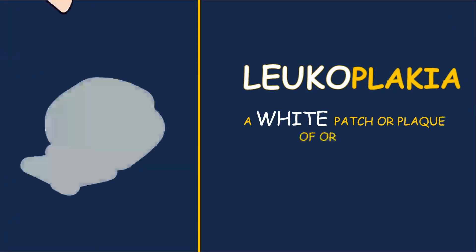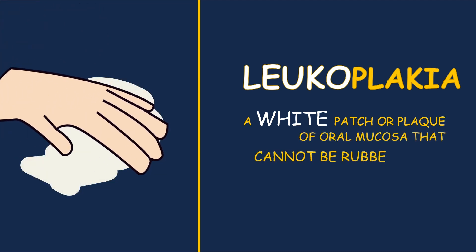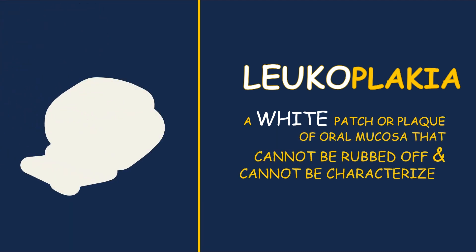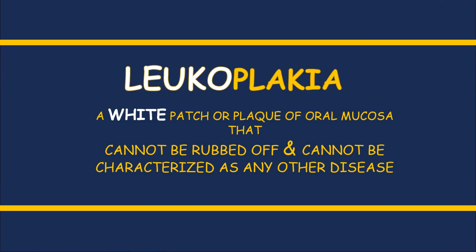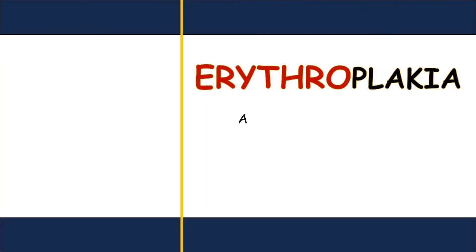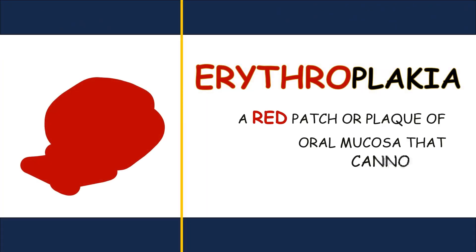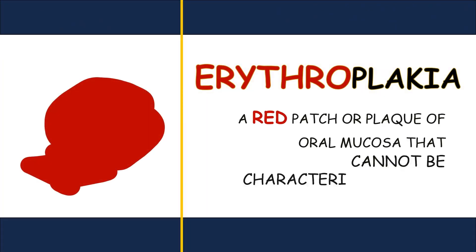Leukoplakia is a white patch or plaque of oral mucosa that cannot be rubbed off and cannot be characterized as any other disease, while erythroplakia is a red patch or plaque of oral mucosa that cannot be characterized as any other disease.